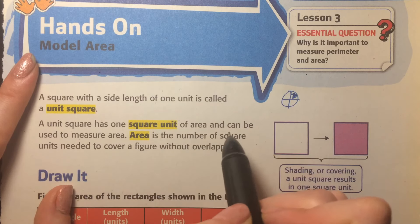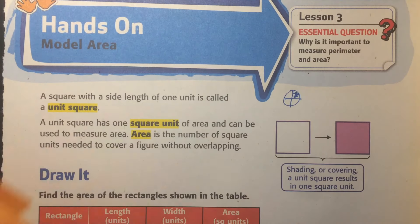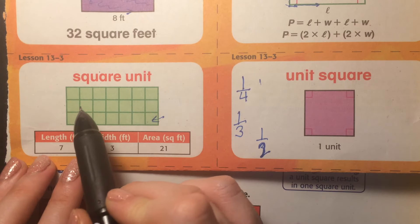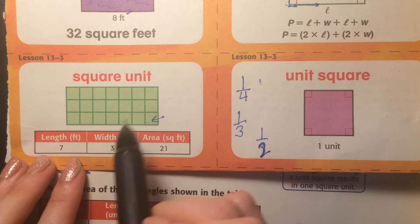A unit square has one square unit of area and can be used to measure area. Area is the number of square units needed to cover a figure without overlapping. So, like this square, we've put in a unit of squares inside, and then we count how many.